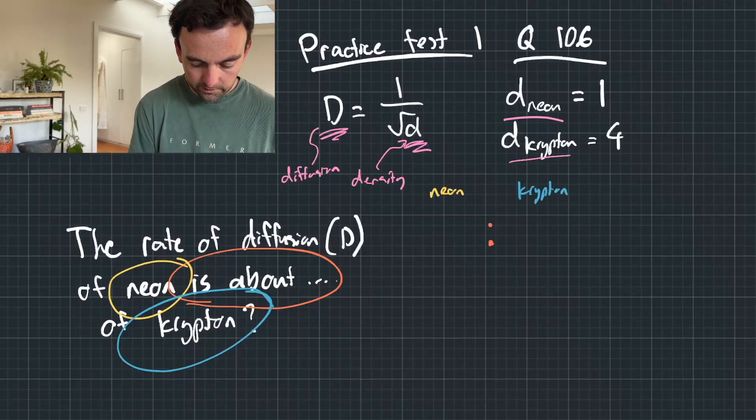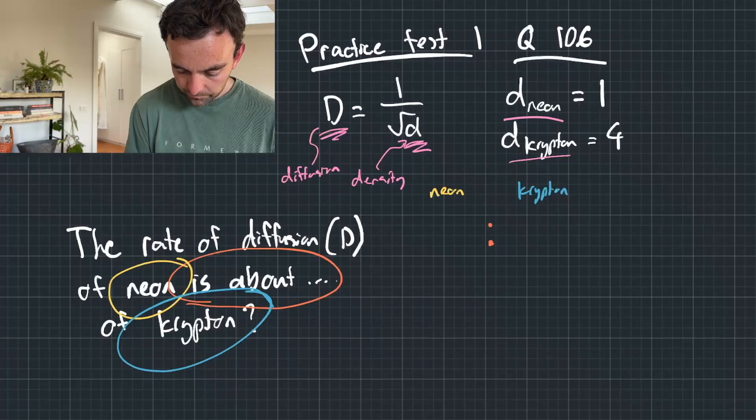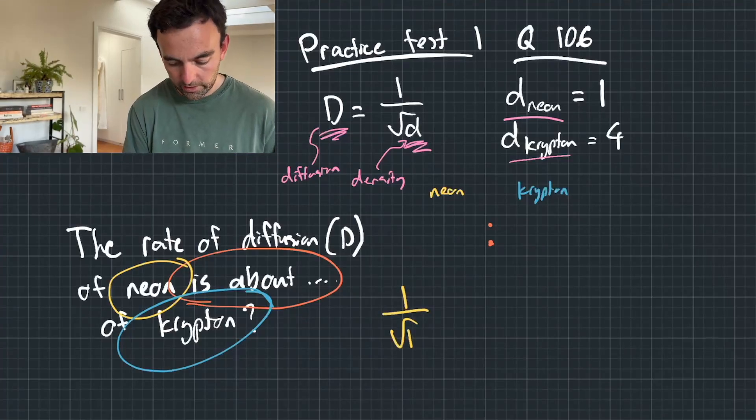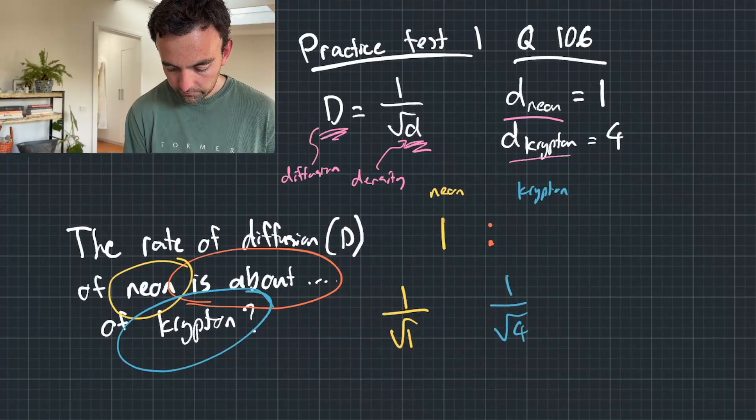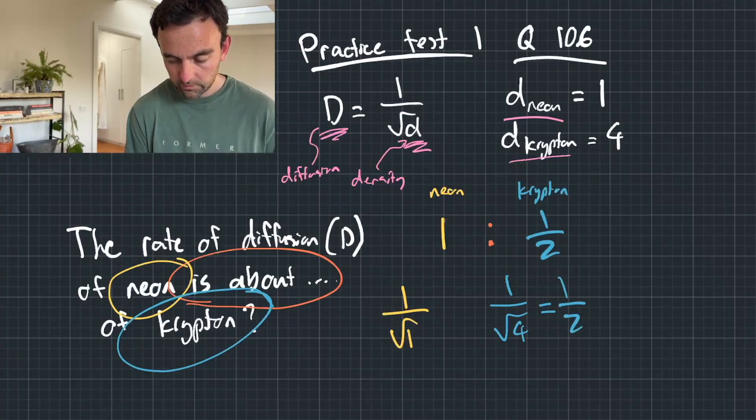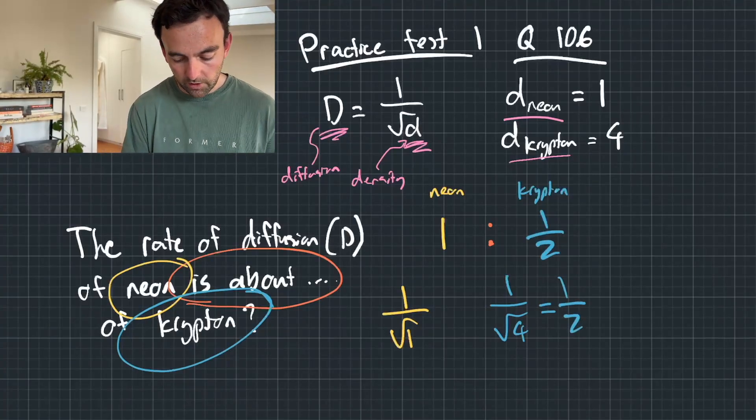So if we use that formula, neon will just equal, so neon will be one over square root of one. So that just equals one. And krypton will be one over the square root of four, which equals one over two.